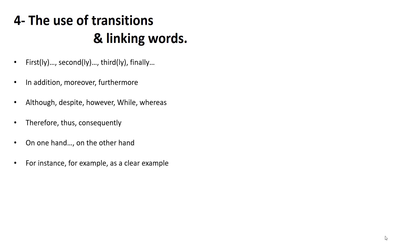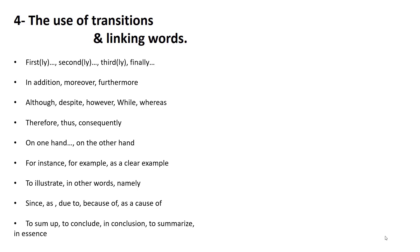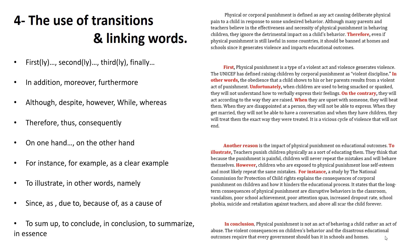'For instance,' 'for example,' and 'as a clear example' are used when giving examples. 'To illustrate,' 'in other words,' and 'namely' are used when explaining what an idea is about. 'Since,' 'as,' 'due to,' 'because of,' and 'as a cause of' are used when stating reasons or causes. 'To sum up,' 'to conclude,' 'in conclusion,' 'to summarize,' and 'in essence' are used in the conclusion paragraph. This is in brief how your essay should look after using transitions and linking words — you can see them throughout the whole essay. But be careful not to overuse them; make sure you use them reasonably. That's all for developing your body paragraphs — now it's practice time.